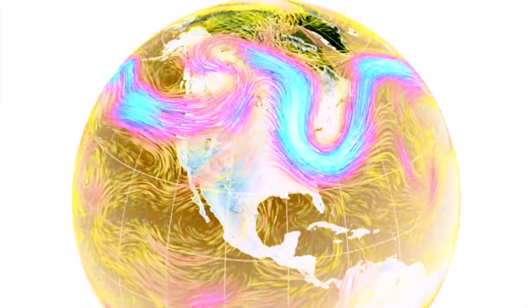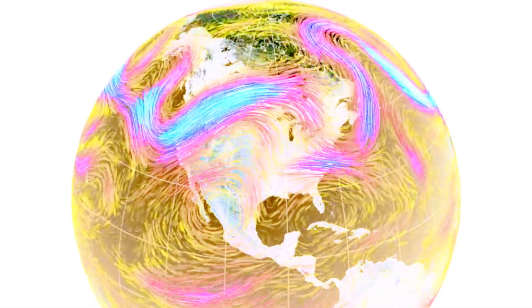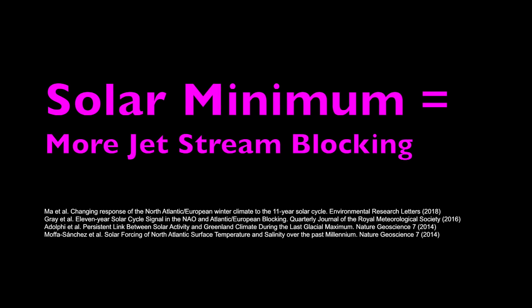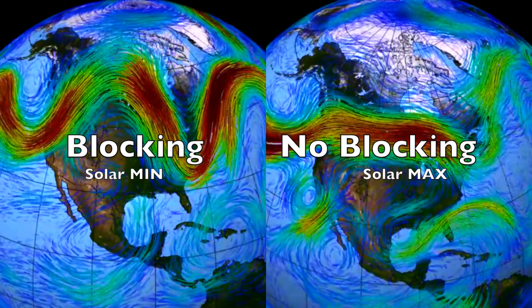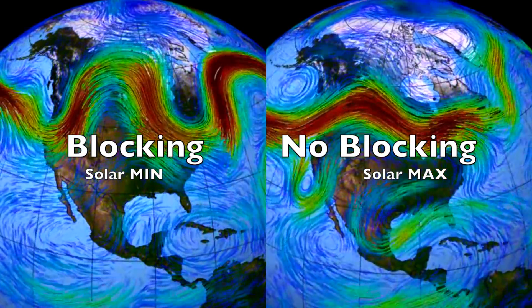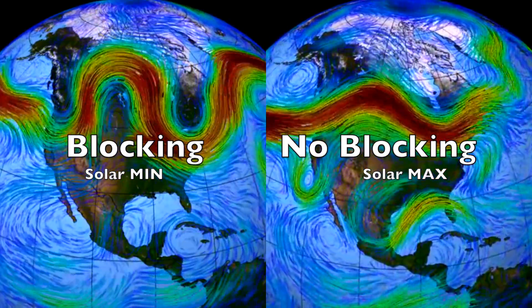The first key fact is that solar minimum brings more jet stream blocking, while solar maximum brings fewer such events. Jet stream blocking is how you get considerable exacerbation of drought or flooding, and how you go from 10 degrees above average one day to major storms that night and 10 degrees below average in the days that follow.